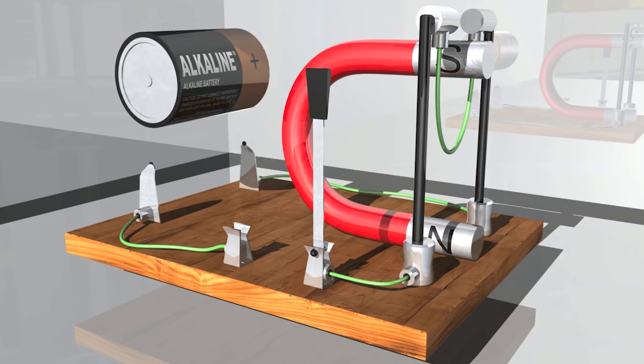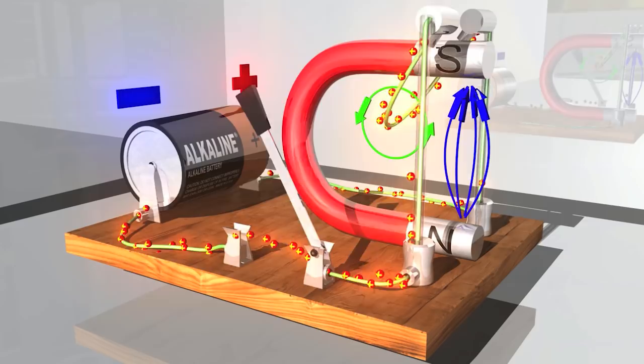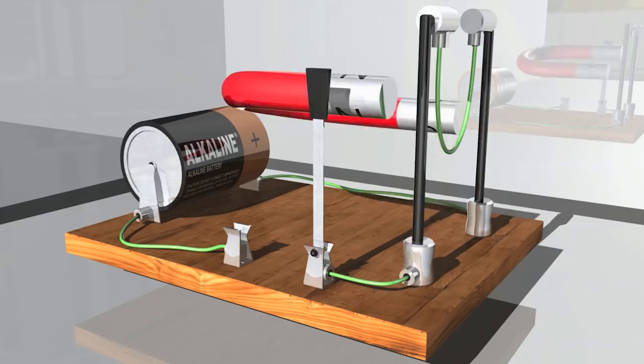If we reverse the direction of the current, the magnetic field that generates will turn in the opposite direction, causing in turn the pendulum to swing in the opposite direction. Flipping the horseshoe magnet around to reverse the magnetic field will also cause the wire to swing in the opposite direction.